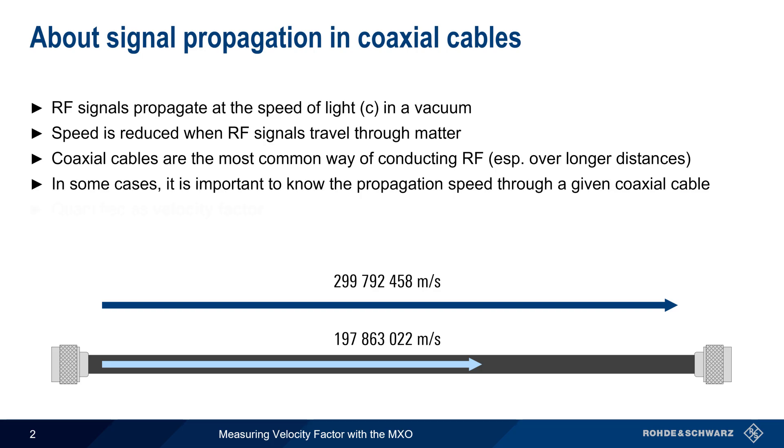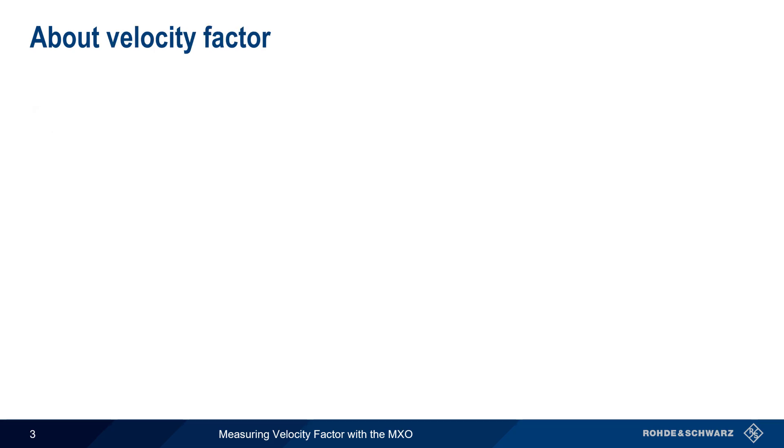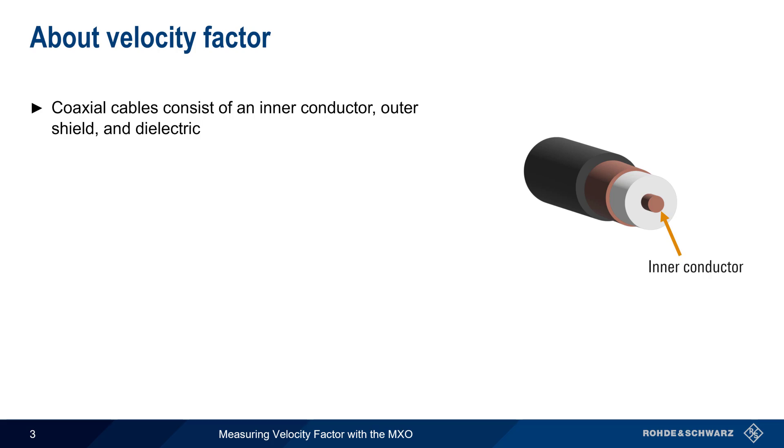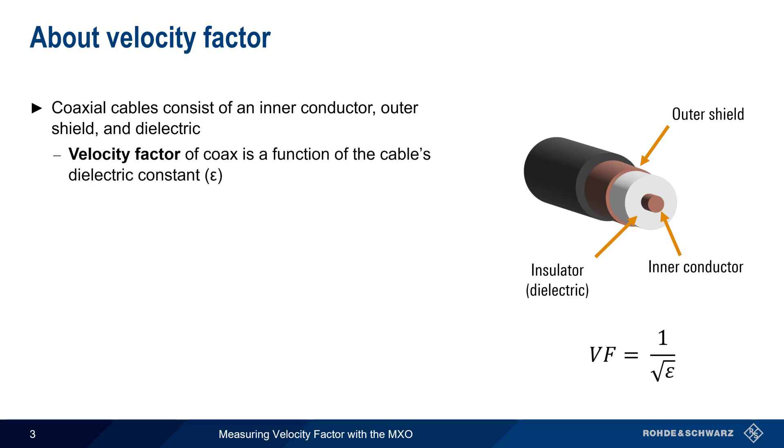Coaxial cables consist of an inner conductor, an outer conductor, and an insulating or dielectric material between them. The velocity factor of a coaxial cable is a function of that cable's dielectric constant epsilon, and is independent of the frequency carried by the cable.